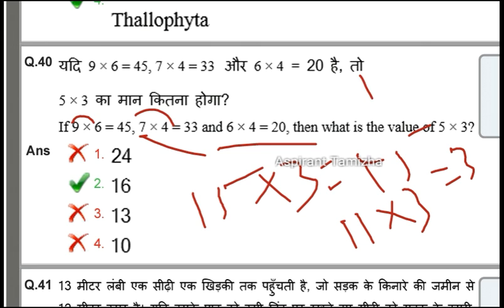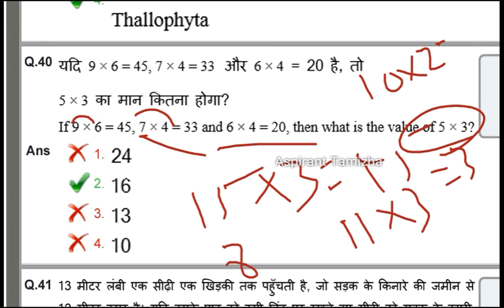The next question: 6 to 4. 1 into 6, 4 is 24, then it will be 20. Then it will be 53, then it will be 20. So the answer is 53, so the answer is 16.